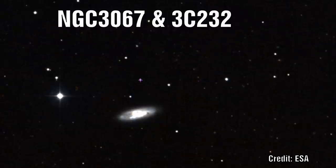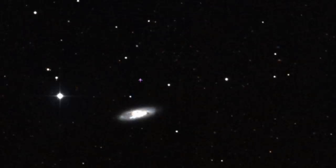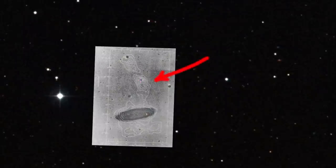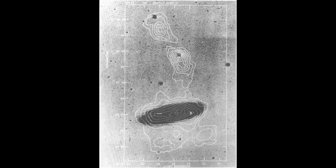NGC 3067 and 3C 232. This is a very active starburst galaxy with an associated quasar situated above it. A filament of hydrogen can be seen extending from this galaxy to the quasar and beyond. The quasar also seems to be located at the densest part of this filament.